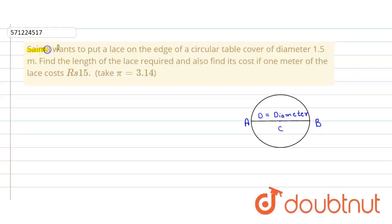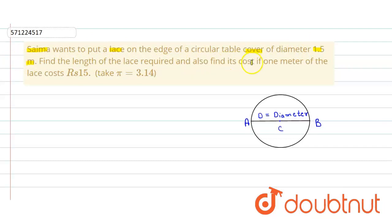In the given question, Saima wants to put a lace on the edge of a circular table cover of diameter 1.5 meters. We have to find the length of the lace required, and also find the cost if one meter of the lace costs rupees 15.